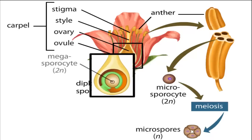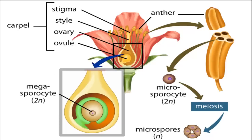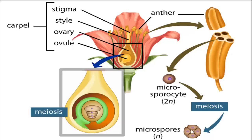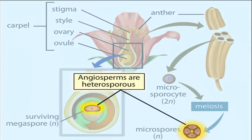A single diploid megasporocyte exists in the ovule and divides by meiosis to produce four haploid megaspores, only one of which survives. By producing two different types of spores, the microspores and megaspores, angiosperms and all other seed plants are considered heterosporous.